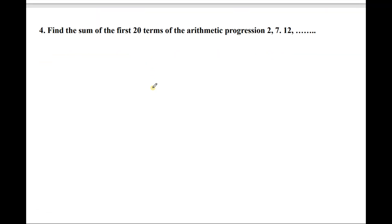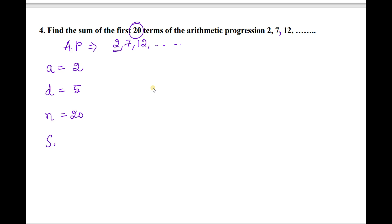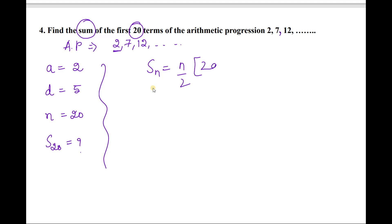Next, find the sum of the first 20 terms of the AP: 2, 7, 12. First identify: a = 2 (first term), d = 7 − 2 = 5 (common difference), and n = 20. We need to use the Sn formula: Sn = n/2 · [2a + (n − 1)d]. Substitute: S20 = 20/2 · [2(2) + (20 − 1)·5].